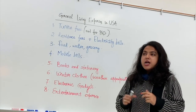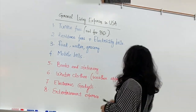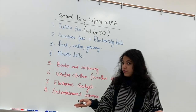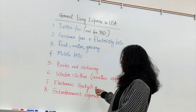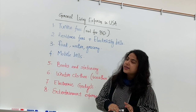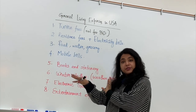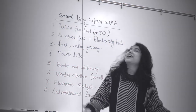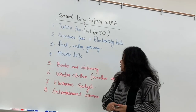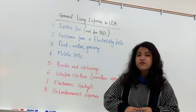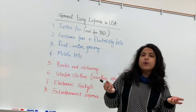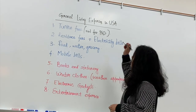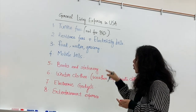Next is electronic gadgets. If your phone stops working, you'll need to buy a new one. Other things like a hair dryer or a trimmer — don't buy them from India, because the voltage is different and you'd need an adapter. Finally, entertainment: you need to set aside some money from your salary for entertainment, whether that's going to a movie or hanging out with friends.